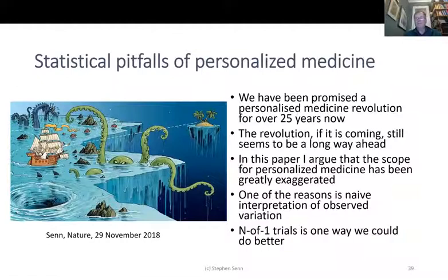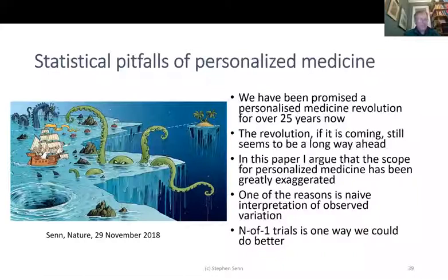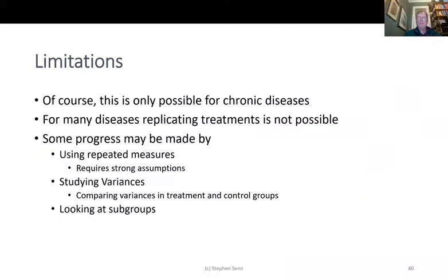In the Nature paper, I argue that the scope for personalised medicine has been greatly exaggerated, partly due to naive interpretation of observed variation. Top of the list of misinterpretations are numbers needed to treat — if Cochrane could ban numbers needed to treat, that would be a great service to mankind. N-of-1 trials are one way we could do better, though they're only possible for chronic diseases. Some progress may be made using repeated measures, studying variances, comparing variances in treatment and control groups, and looking at subgroups. The key is thinking in terms of variation and distributions, not just point estimates.